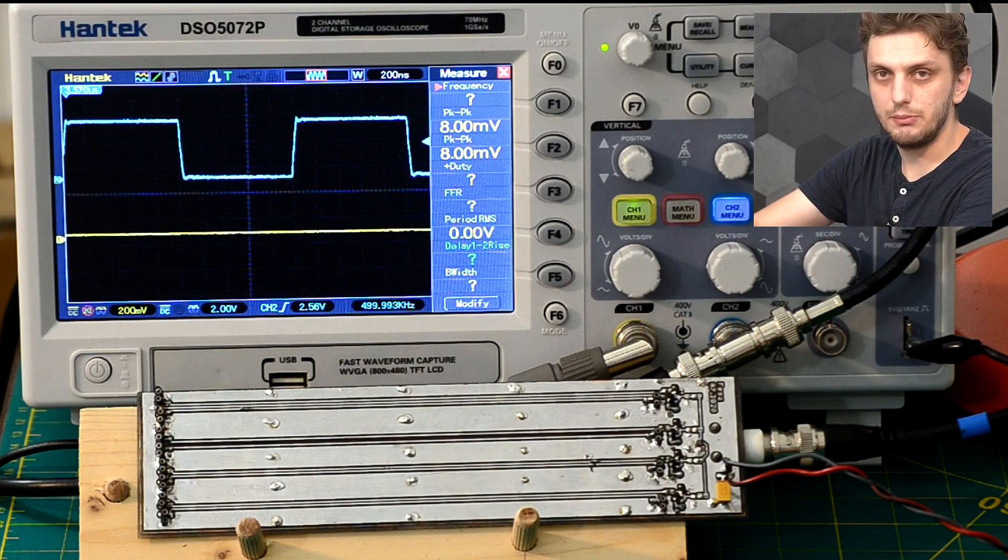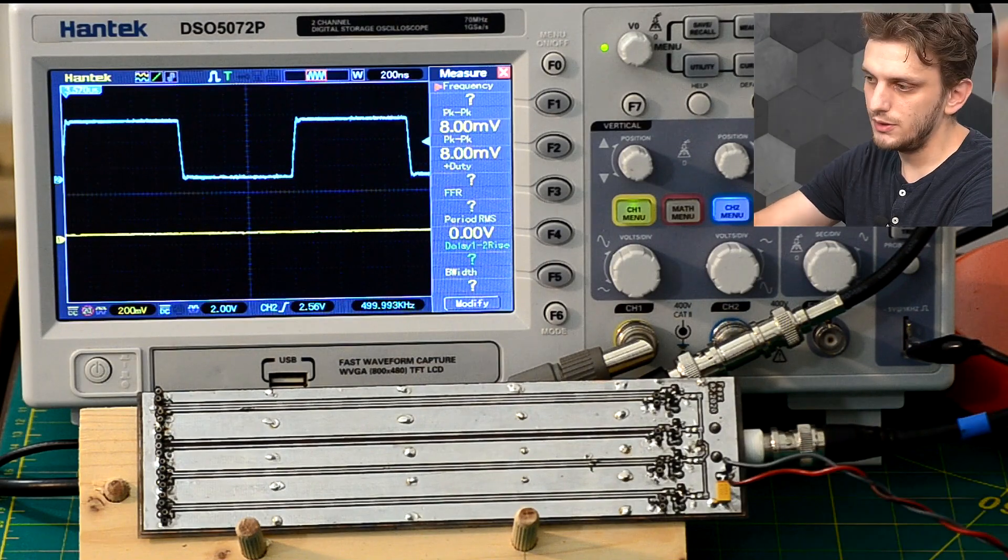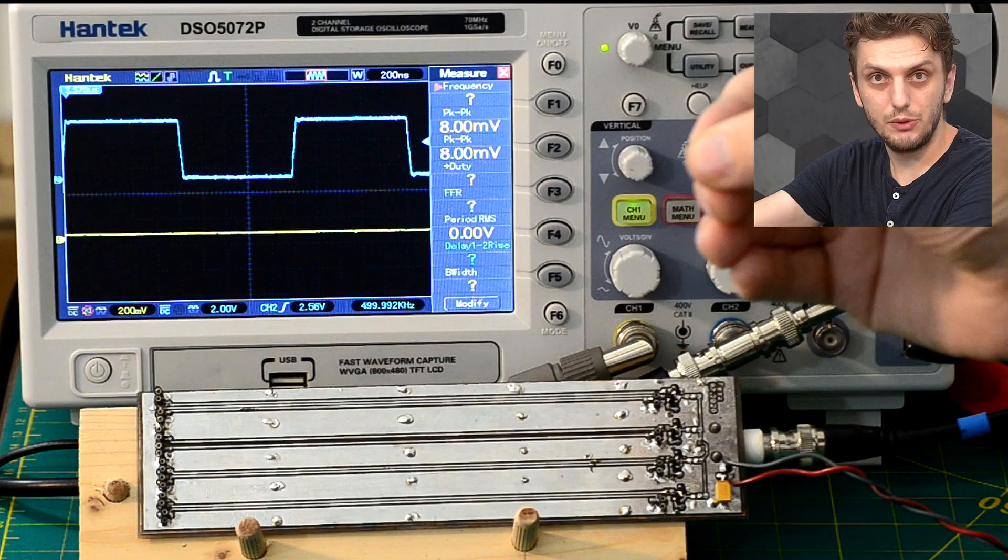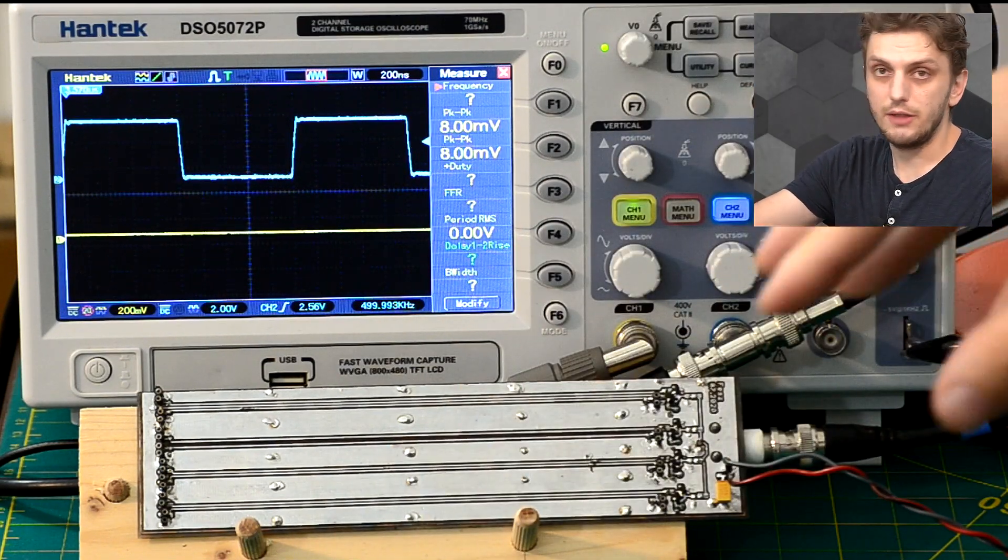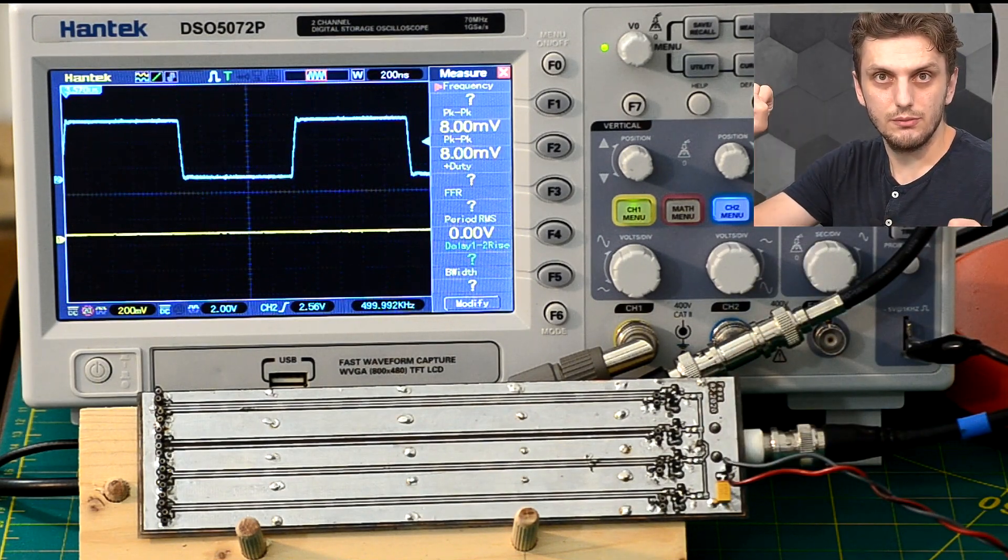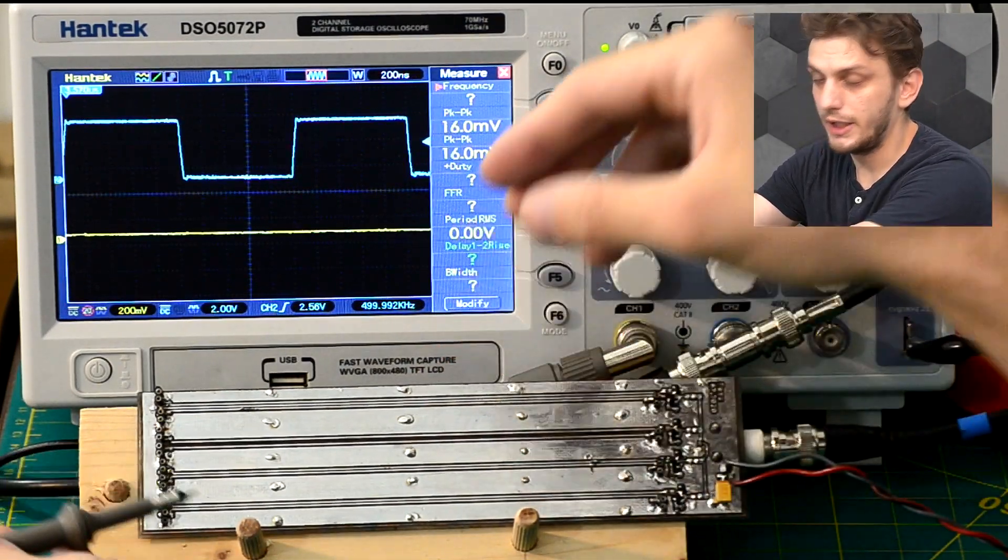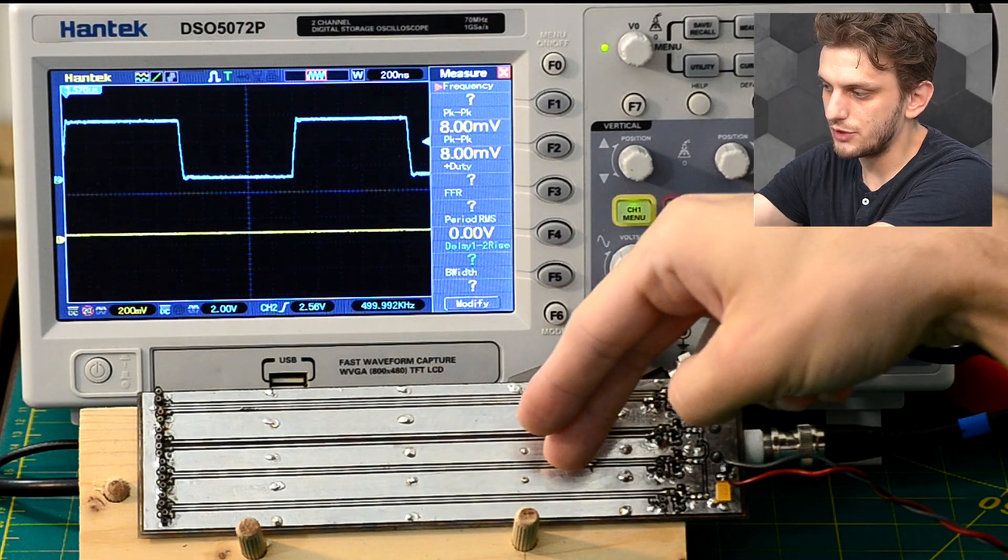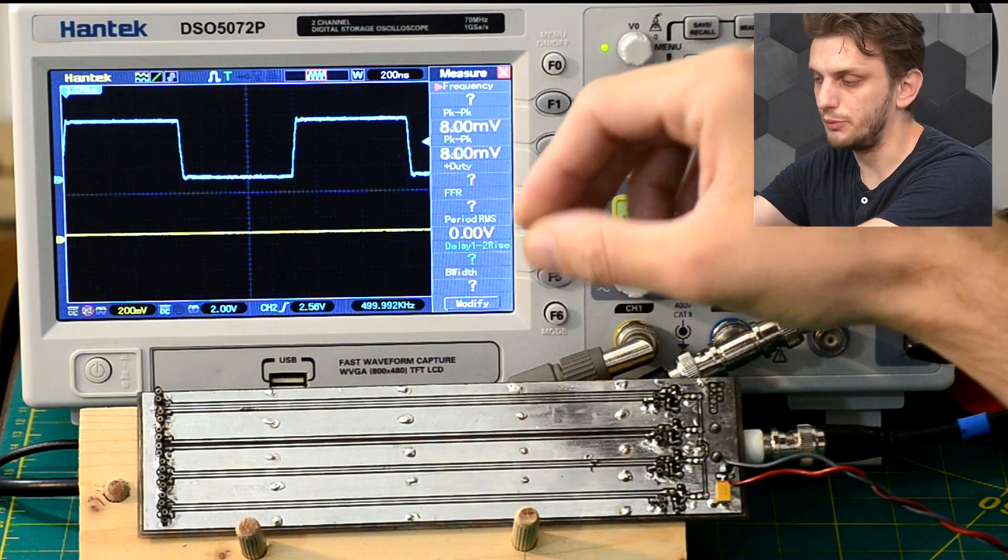Now of course another thing that can be done is increasing the distance in between the traces. So if the distance is increased, you will have both smaller capacitance in between the traces because of the larger distance, and you will have a weaker magnetic coupling, again because the two inductors are more spread apart. So on my third experiment I have both the ground plane beneath and I also increased the distance in between the traces from 0.4 millimeters up to 1.4 millimeters.